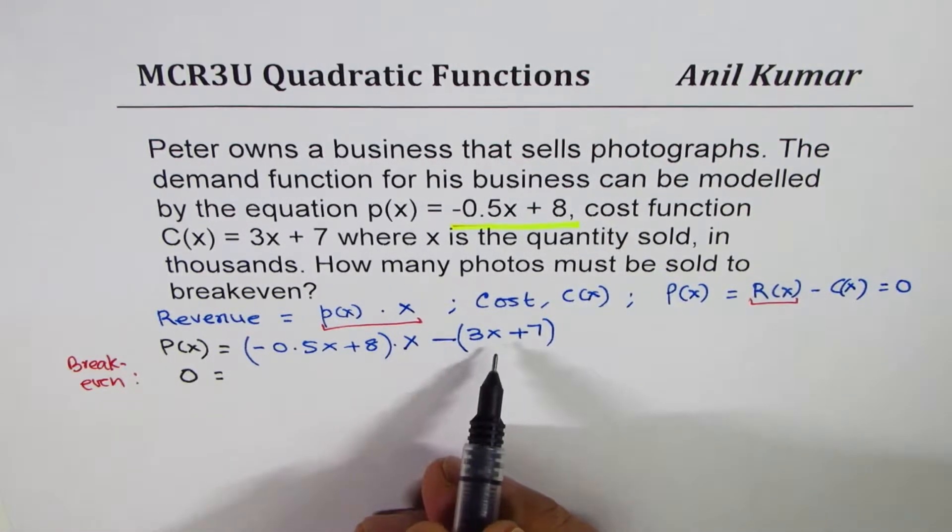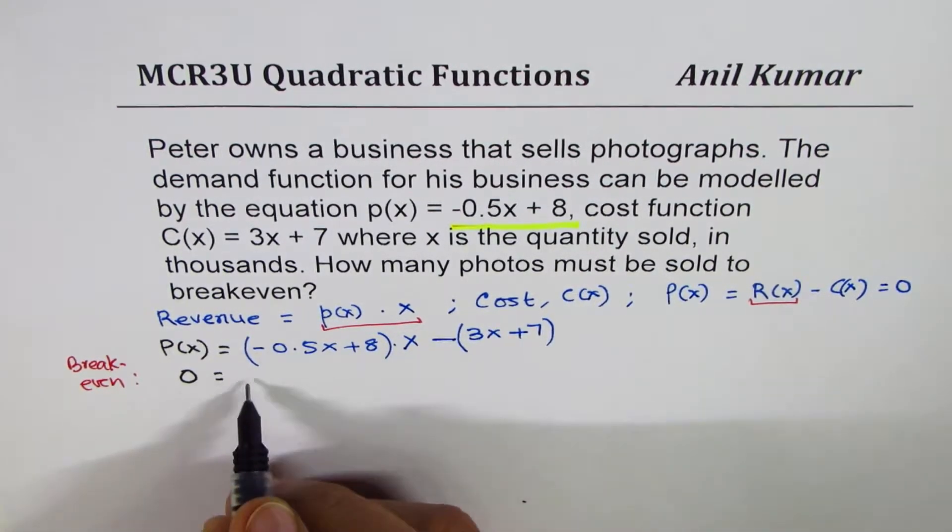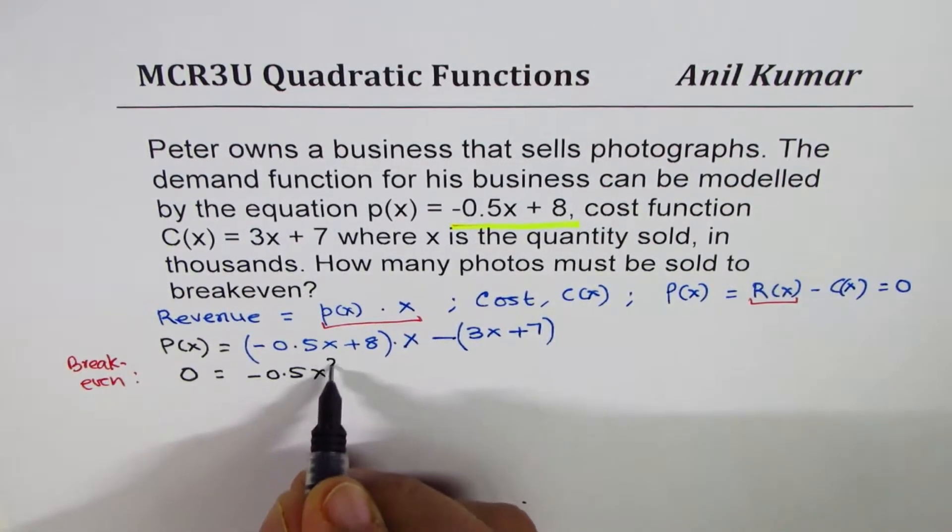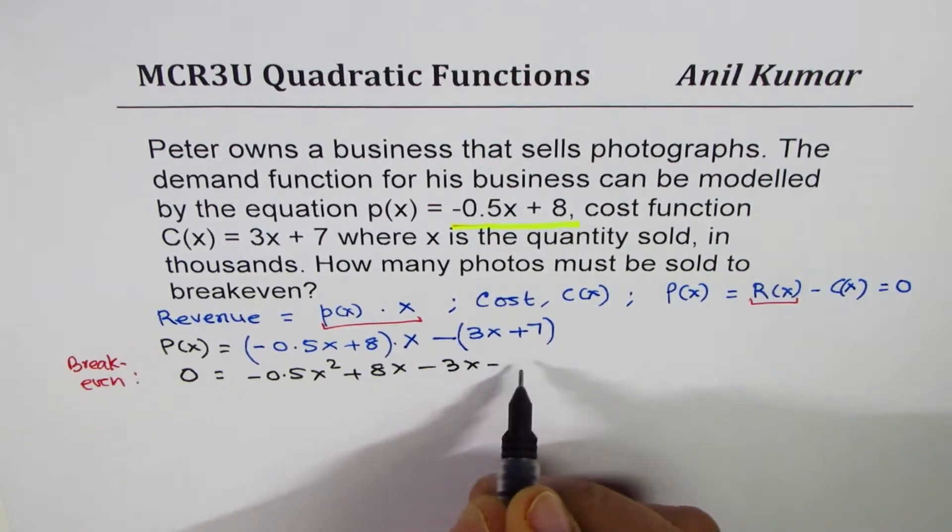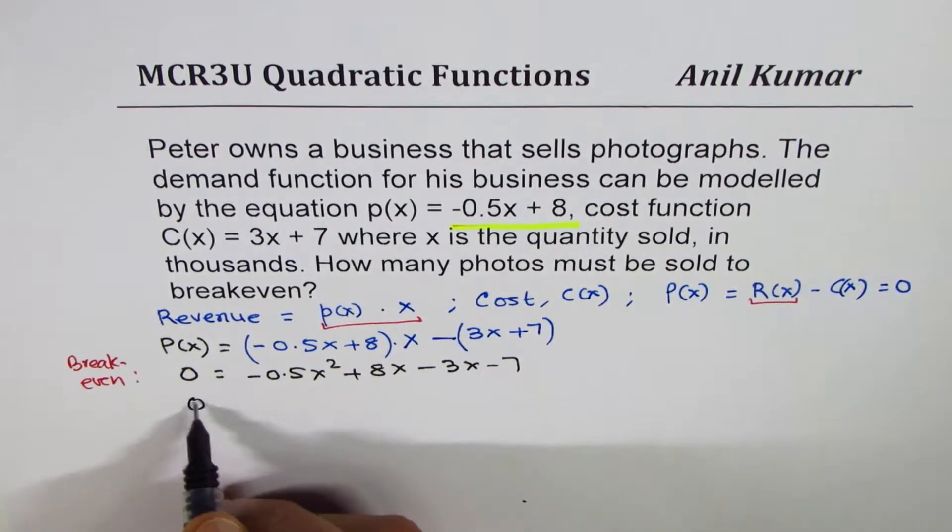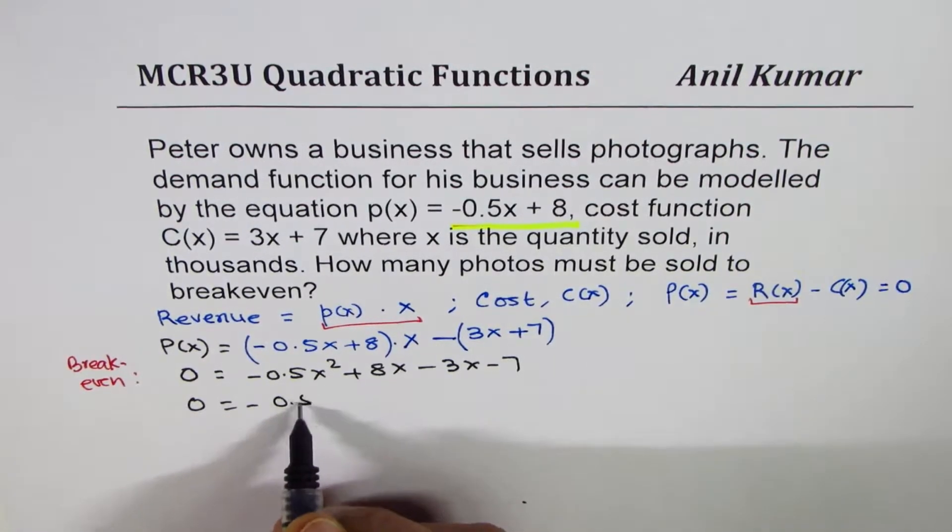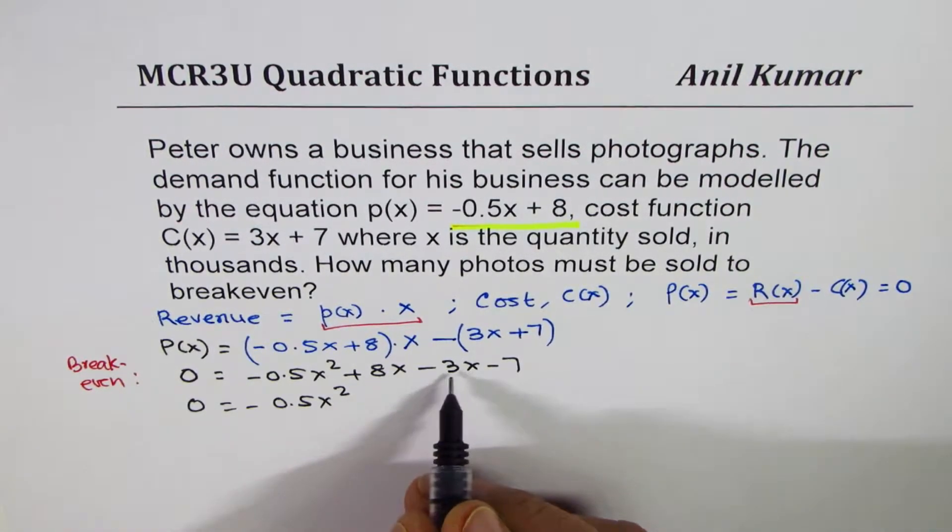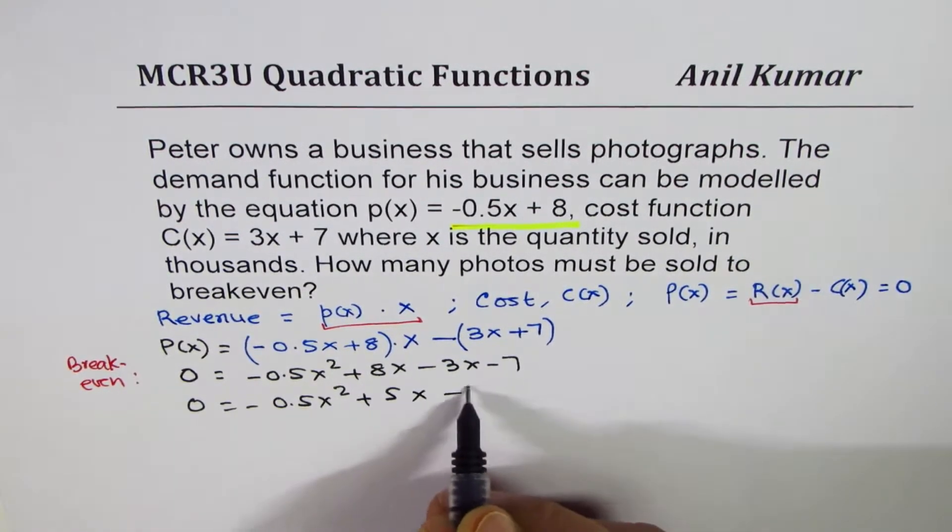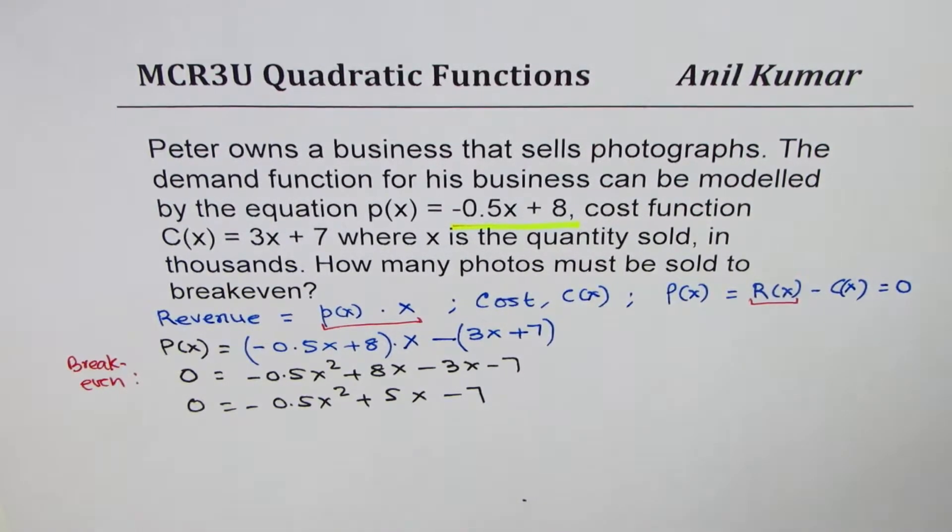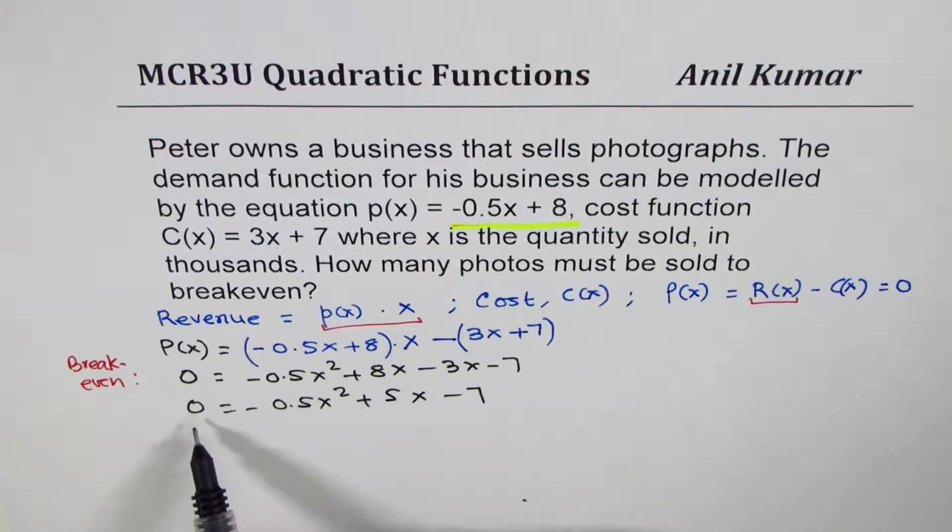And now we can actually expand and simplify. So when you expand, you get minus 0.5x square plus 8x. This gives you minus 3x minus 7. Combine the like terms, we get zero equals to minus 0.5x square. And when you combine 8 minus 3 is 5. So you get plus 5x minus 7. So that is how you can get a quadratic equation. And now the idea is to figure out what is the value of x, which can give you zero profit.